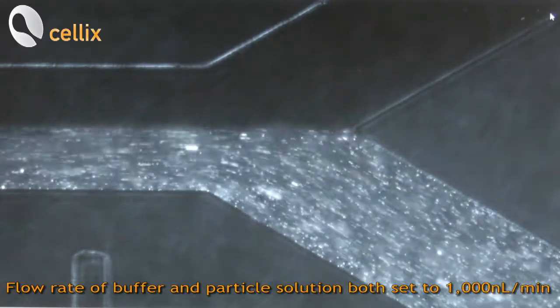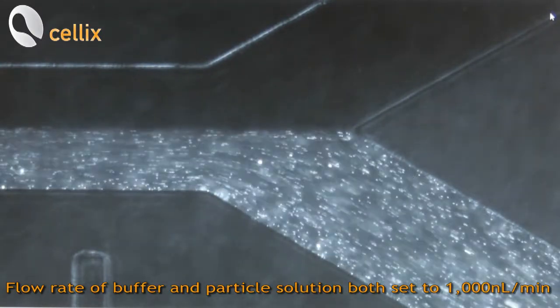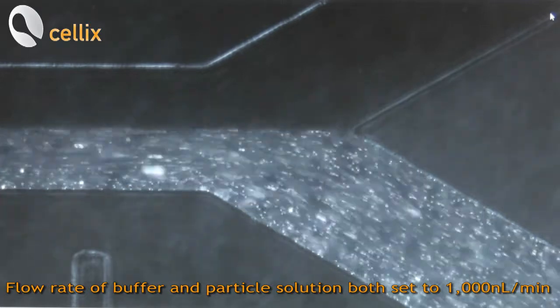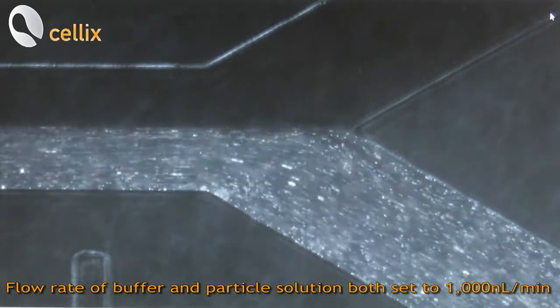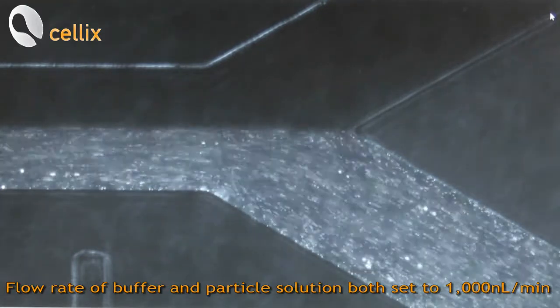As you can see here we have a stable interface. Of course the interface is actually in the middle of the channel as expected because we are running the same flow rate from the two inlets.